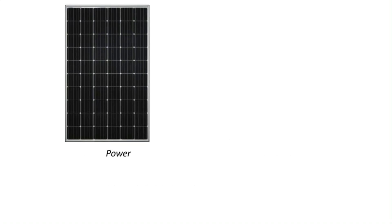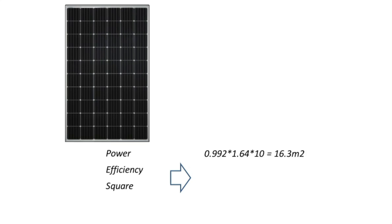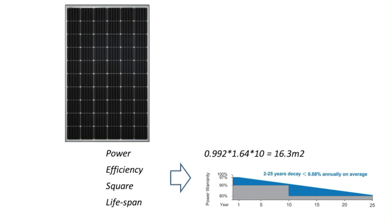When choosing a solar panel, you should focus on power, efficiency, and size. Those parameters will affect the square area of installation on your roof. For example, 10 of those solar panels will take about 16.3 m². So you should make sure your roof has enough space to install those panels. Lifespan is another factor you have to consider. This solar panel will reduce power down to 80% after 25 years of use.